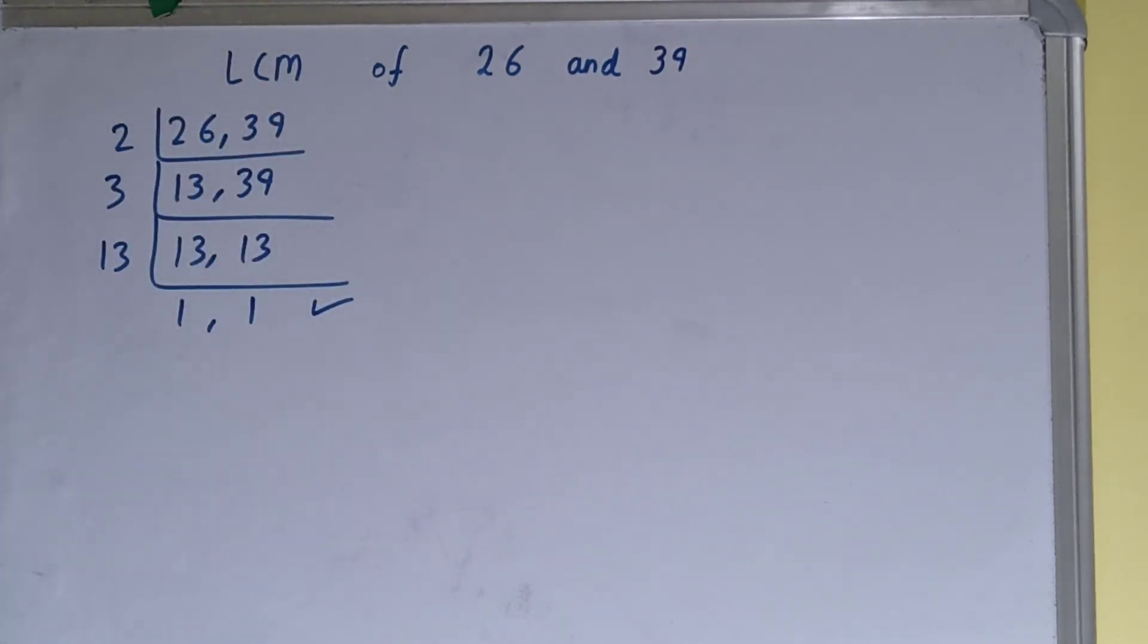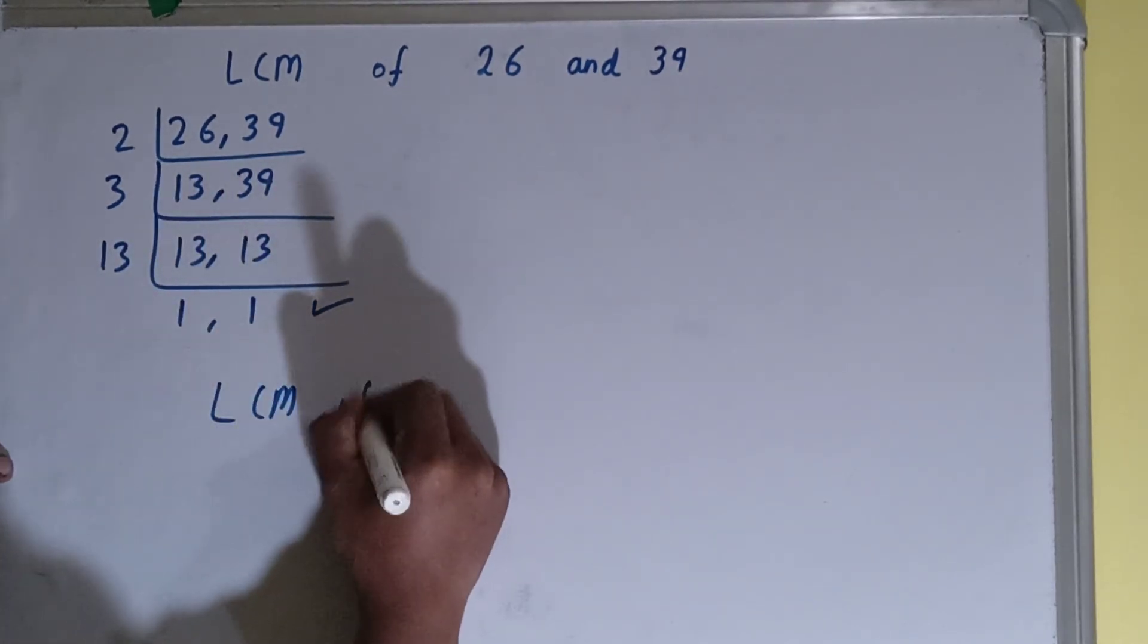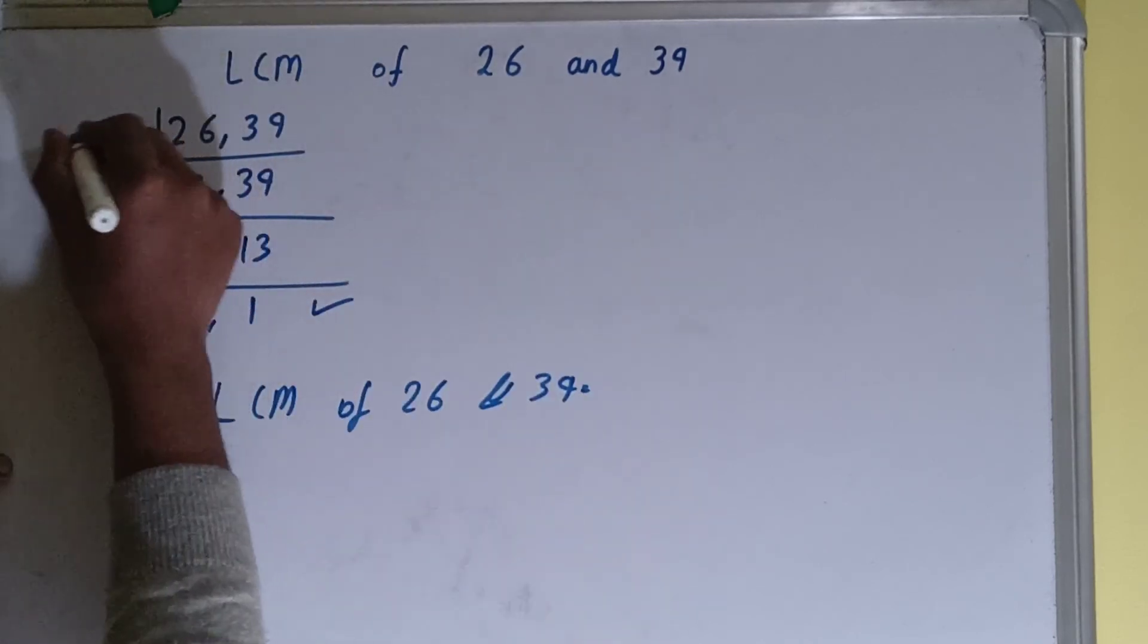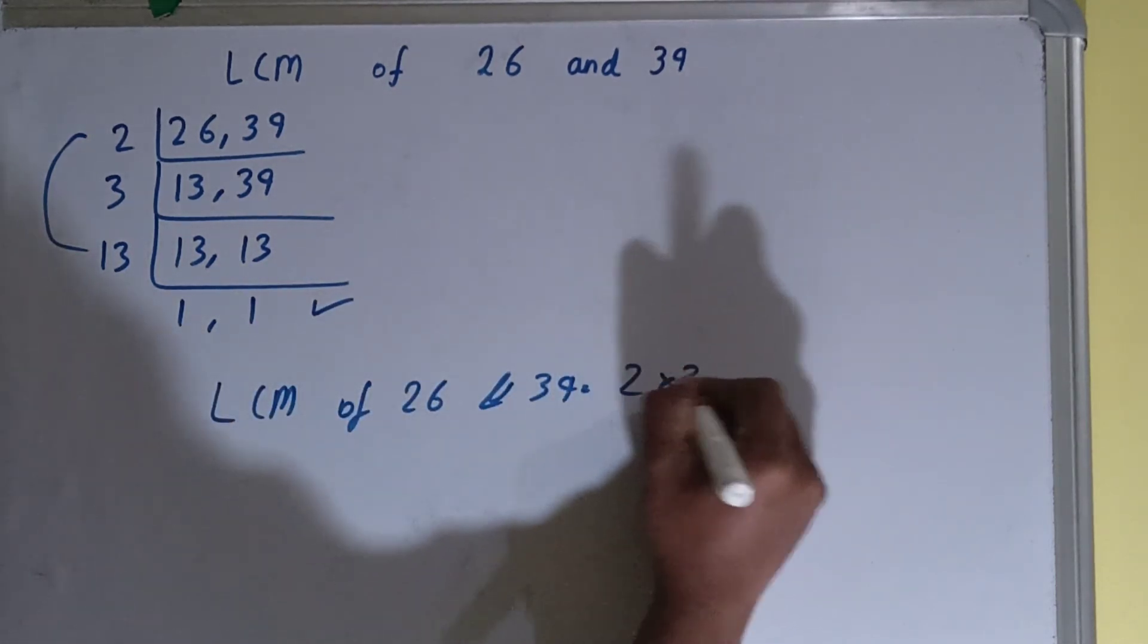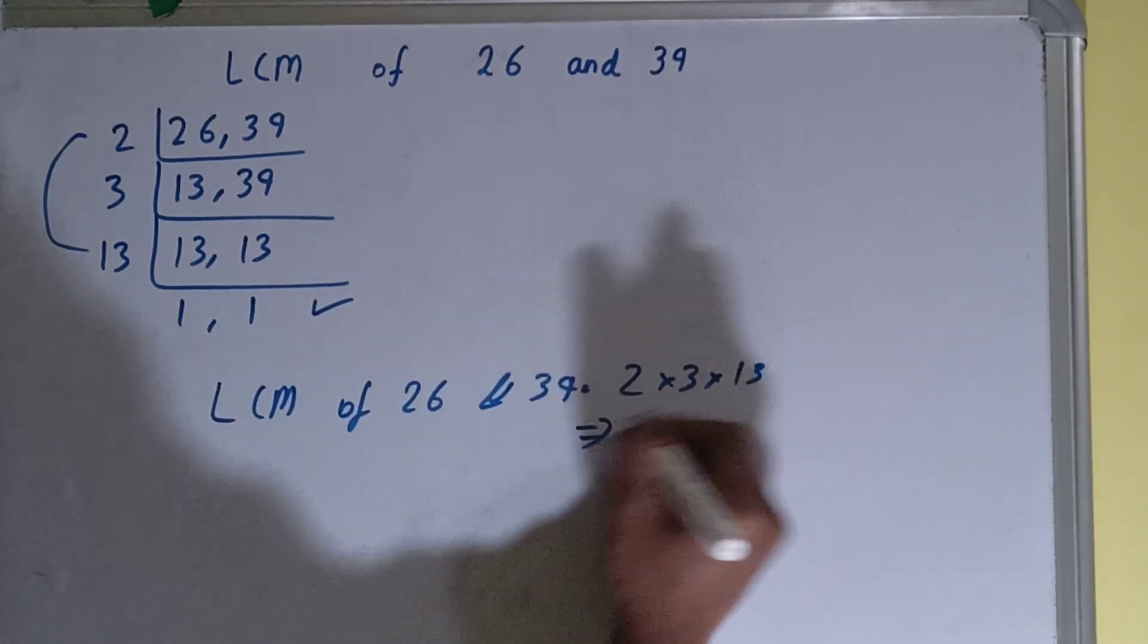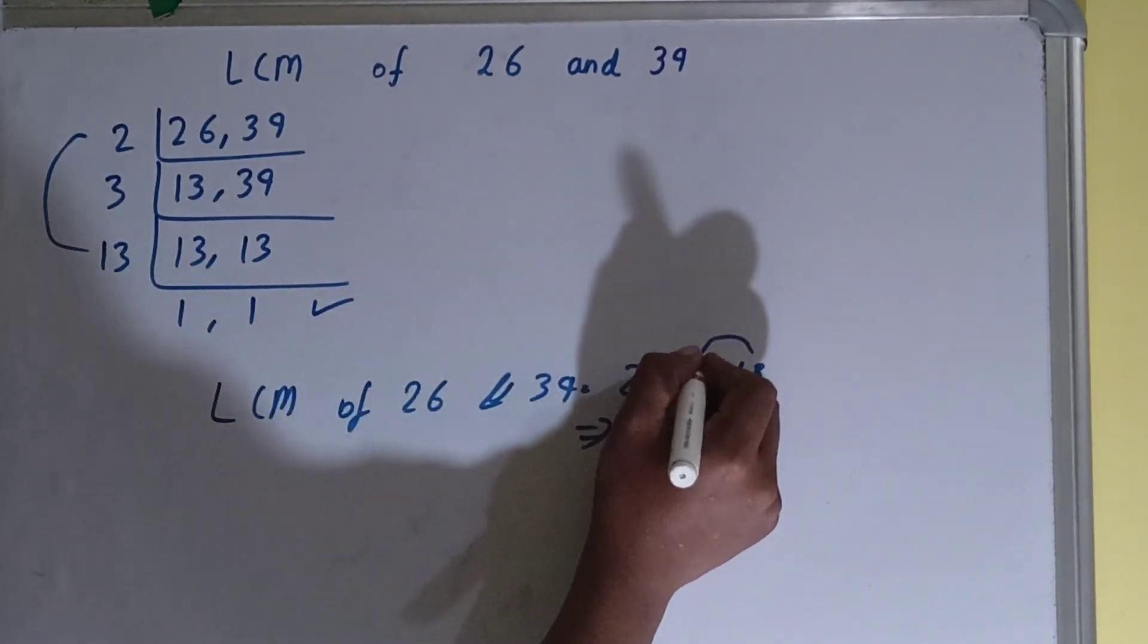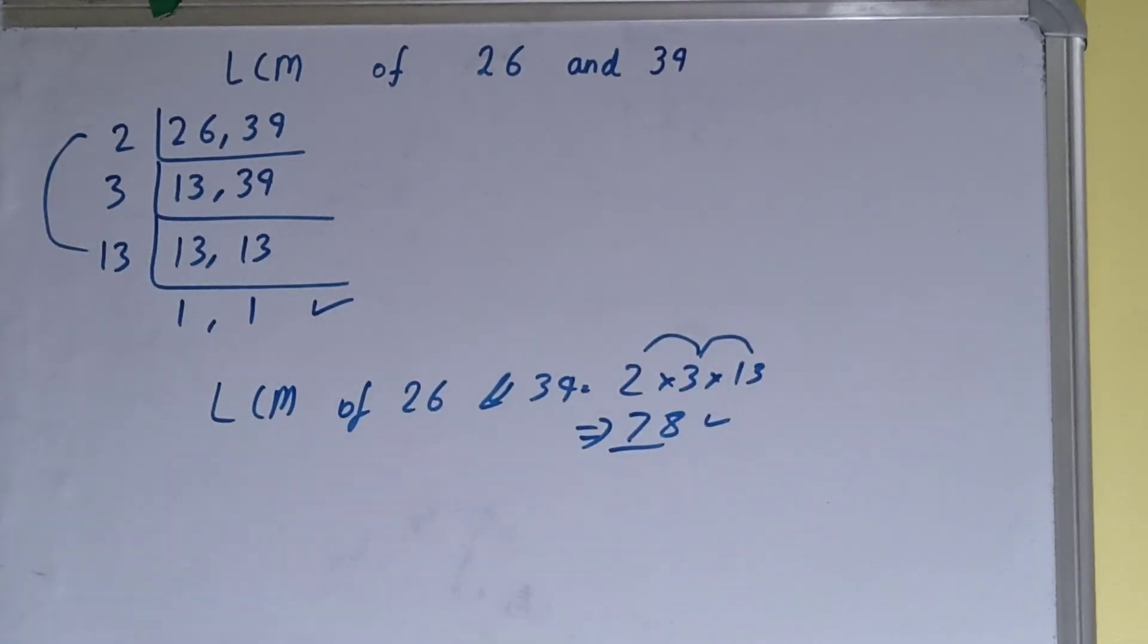We need to do the last thing, that is: LCM of 26 and 39 equals multiply whatever you have got on the left-hand side. That is 2 × 3 × 13. So the answer will be 78. So the answer or the LCM will be 78.